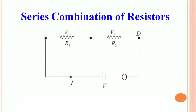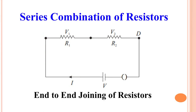To understand the series combination of resistors, consider an electrical circuit with a battery causing a current I to flow. There are two resistances R1 and R2. In a series combination, one end of R1 is joined to one end of R2, and the other ends are free to connect to the battery — this is end-to-end joining of resistors.